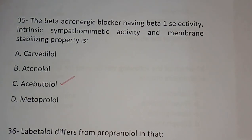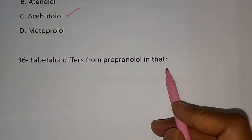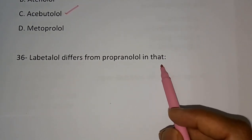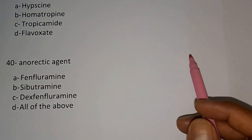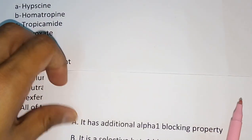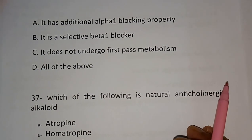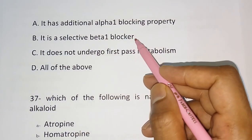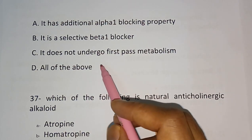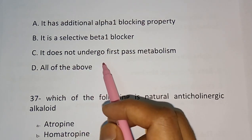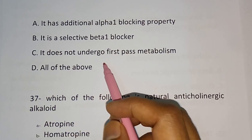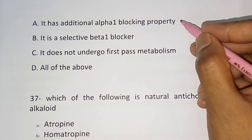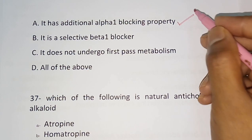Question number 36: Labetalol differs from Propranolol in that — It has additional alpha-1 blocking property, It is a selective beta-1 blocker, It does not undergo first-pass metabolism, All of the above. The correct answer is: It has an additional alpha-1 blocking property.